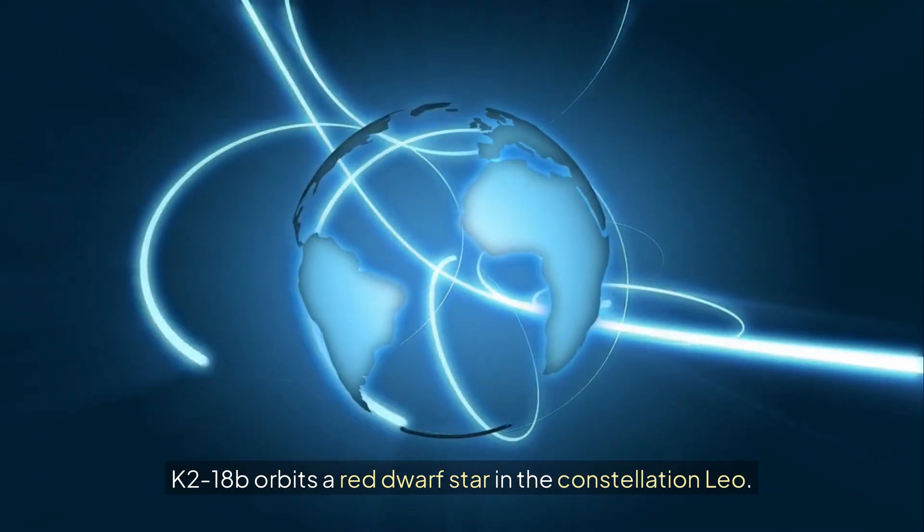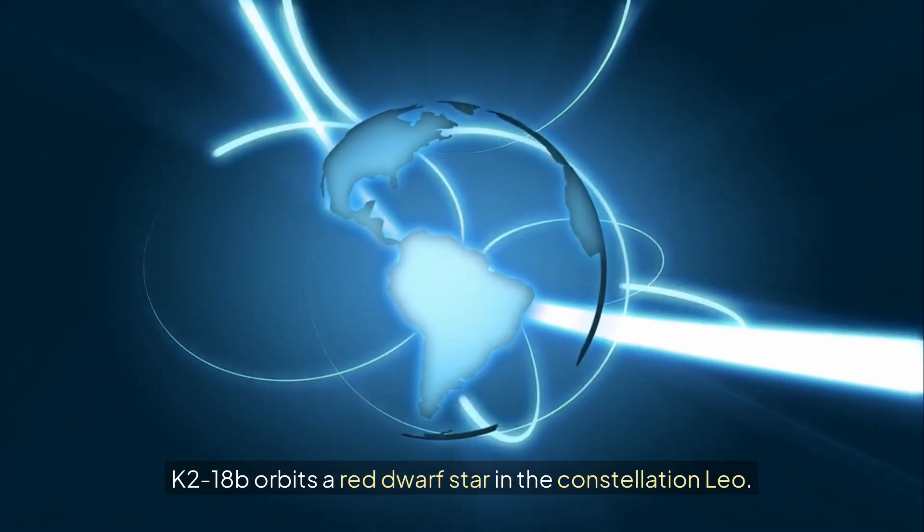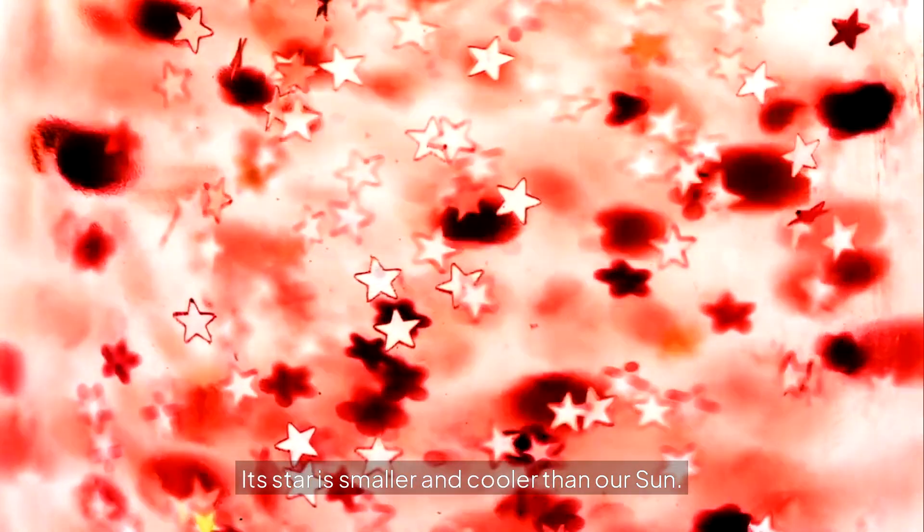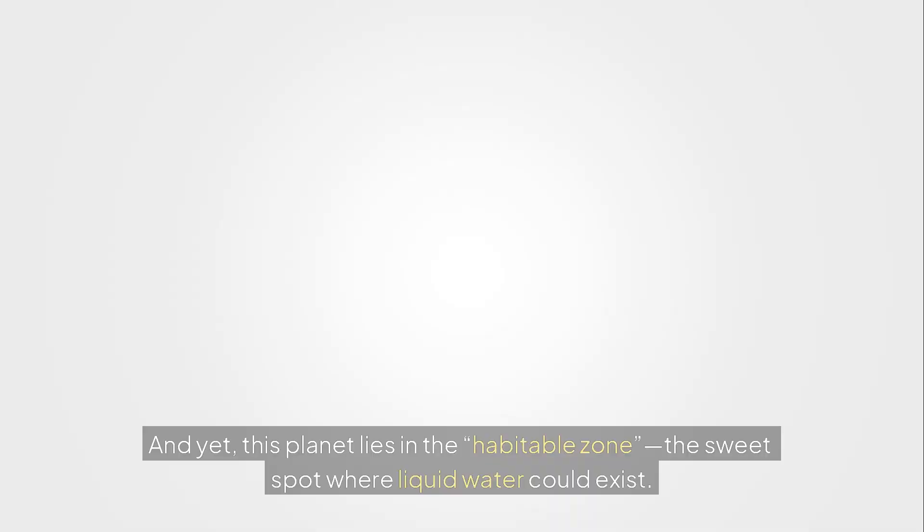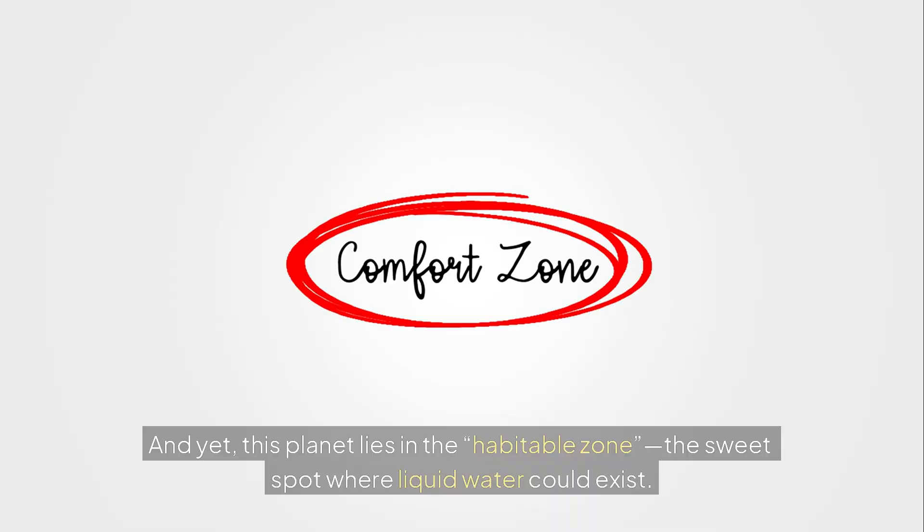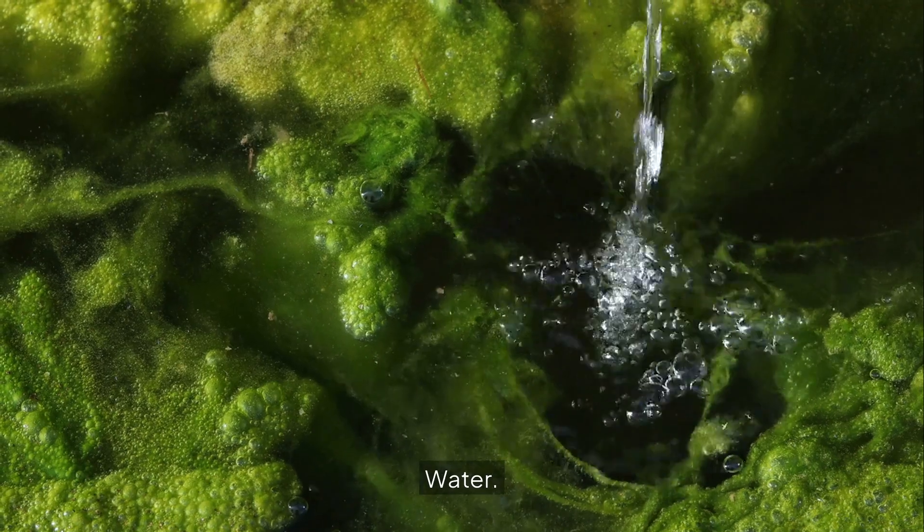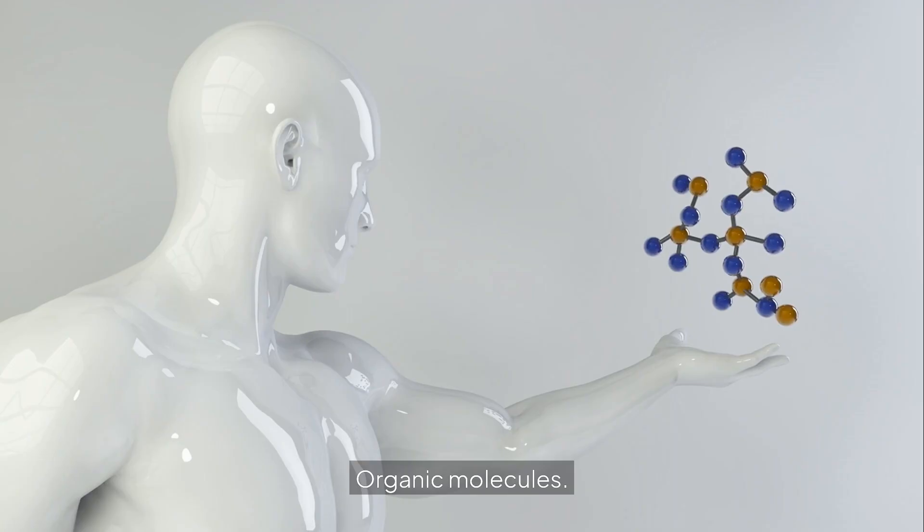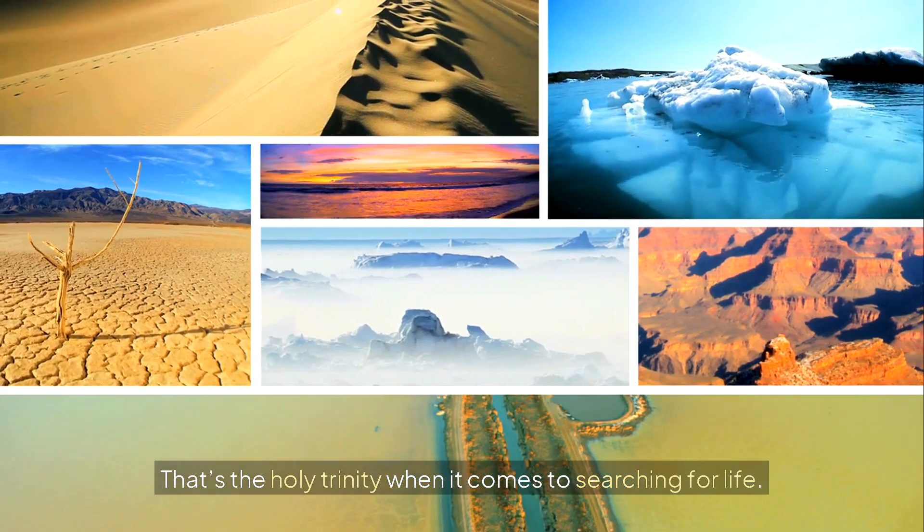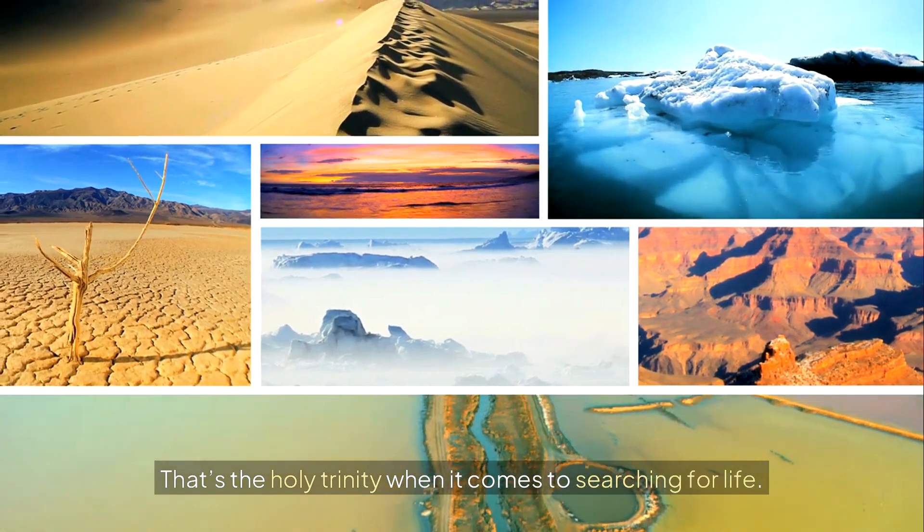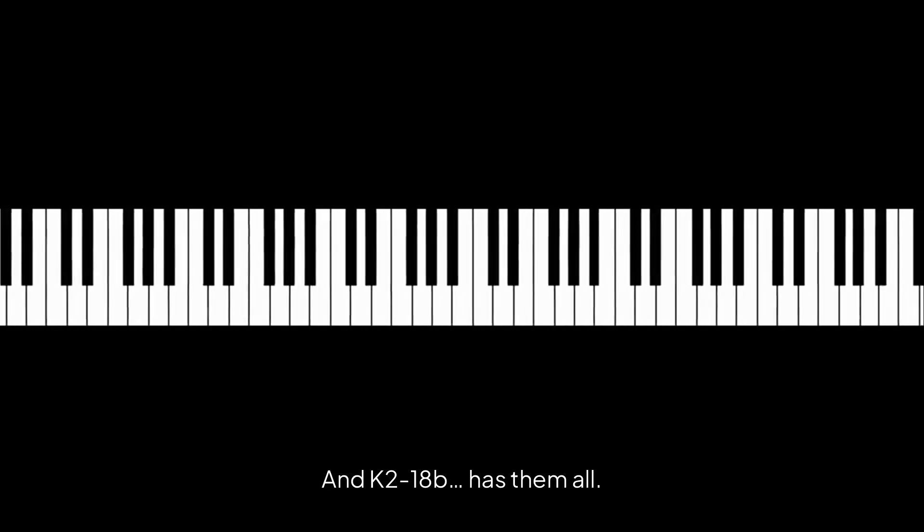K-218b orbits a red dwarf star in the constellation Leo. Its star is smaller and cooler than our Sun. And yet, this planet lies in the habitable zone, the sweet spot where liquid water could exist. Water. Atmosphere. Organic molecules. That's the Holy Trinity when it comes to searching for life. And K-218b has them all.